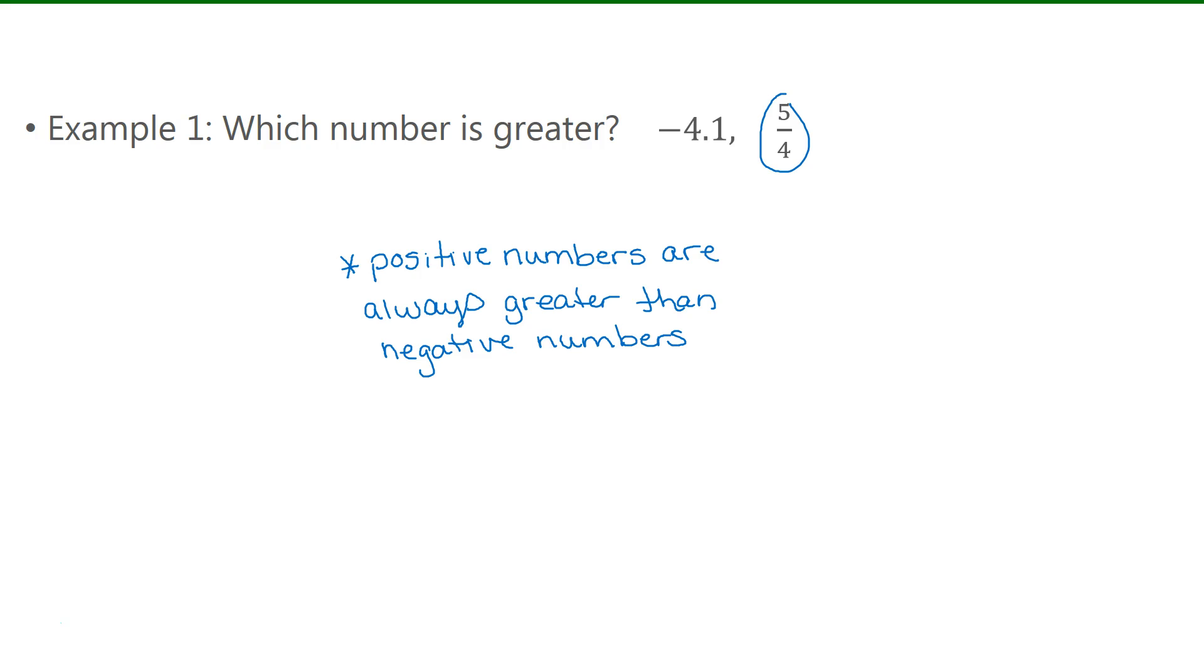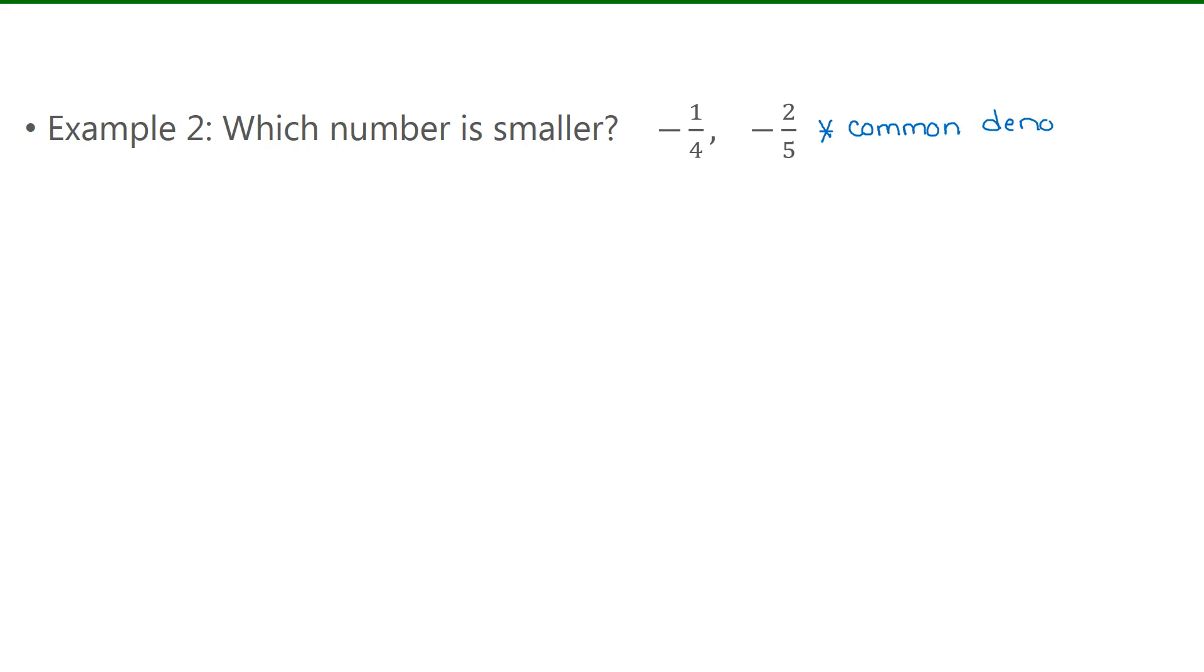Now the next one, we have two negatives in fraction form. So what I'm going to suggest we do is when they're in fraction form, is we find a common denominator. So once they have a common denominator, we can just compare the numerators, since the denominators are going to be the same.